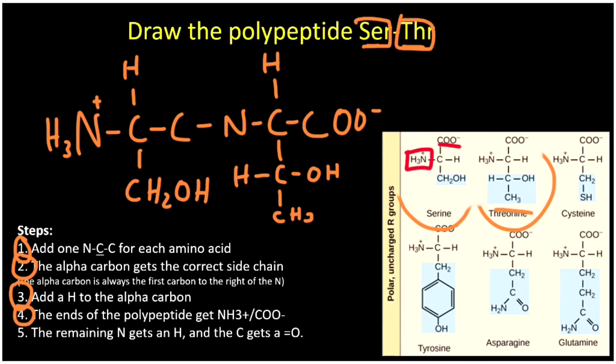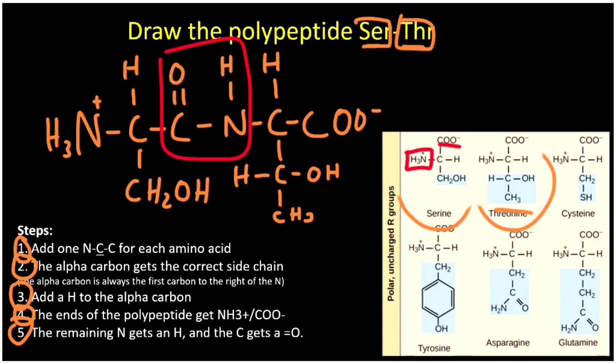The last step: the remaining N gets a hydrogen and the C gets a double bond to an oxygen. So here we get a hydrogen on the nitrogen and a double bond to an oxygen on the carbon — this is our peptide bond linking those two amino acids. And that's a polypeptide with just two amino acids.